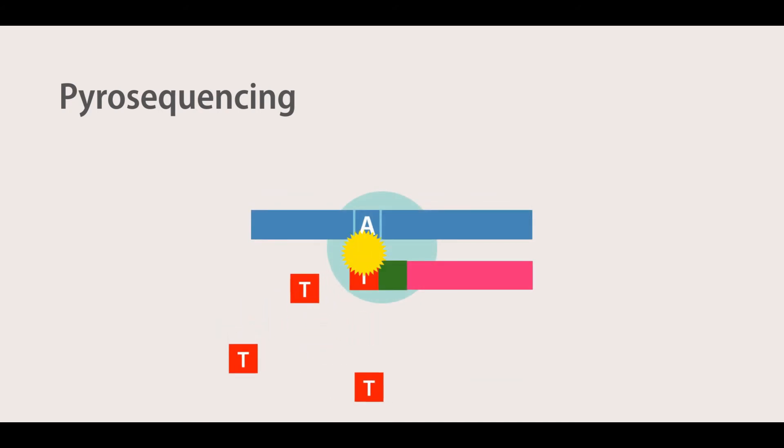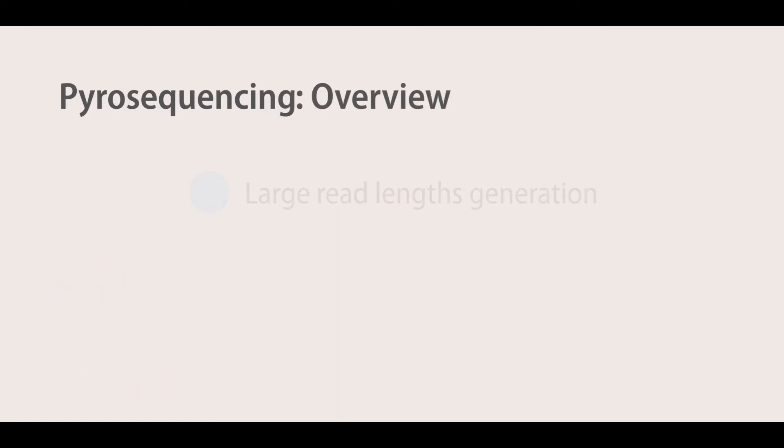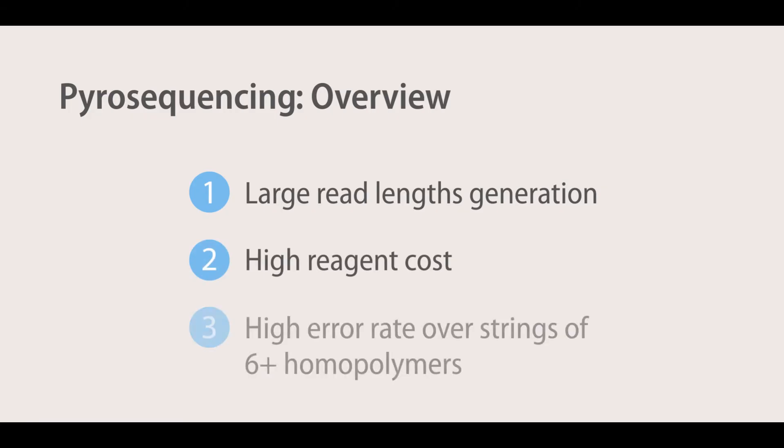The sequencing proceeds by incubating one base at a time, measuring the light emission, degrading the unincorporated bases, and then the addition of another base. This technology is capable of generating large read lengths, much comparable to the read length of Sanger sequencing.